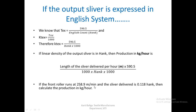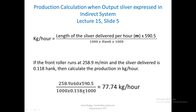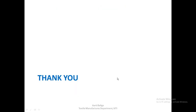If the front roller runs at 258.9 meters per minute and the sliver delivered is 0.118 hank, production in kg per hour is calculated as: length of sliver delivered per hour in meters multiplied by 590.5, divided by 1000 into hank into 1000. Substituting these values gives the answer as 77.74 kg per hour. That completes the solution to all questions from lecture 15. Thank you.